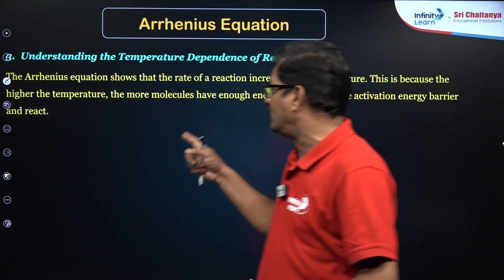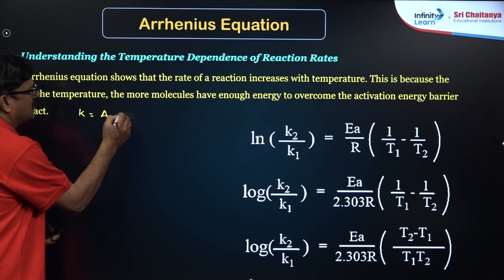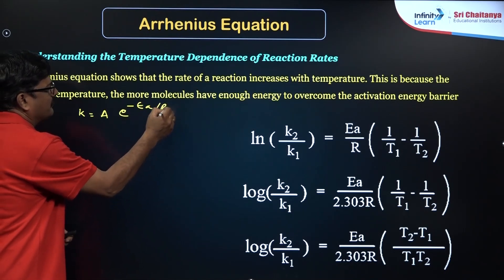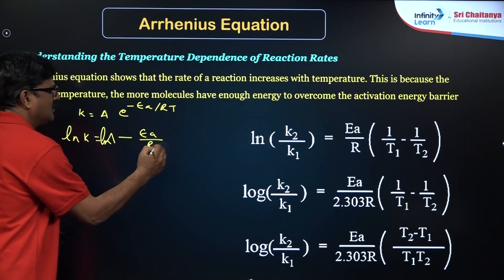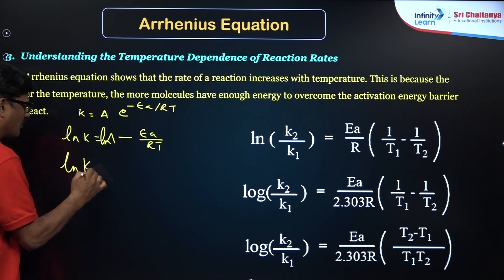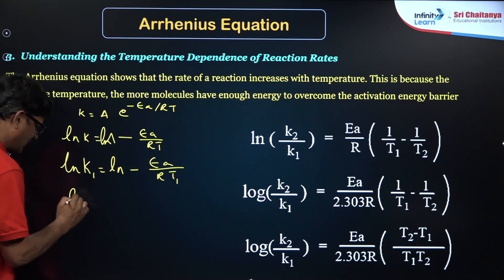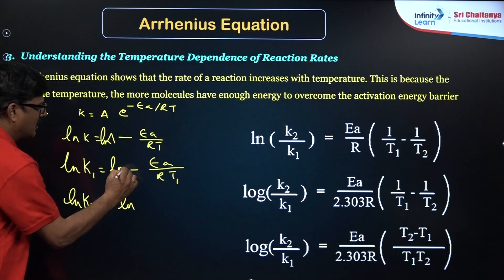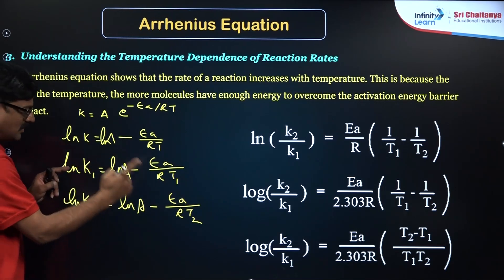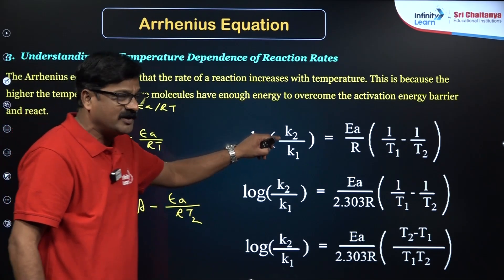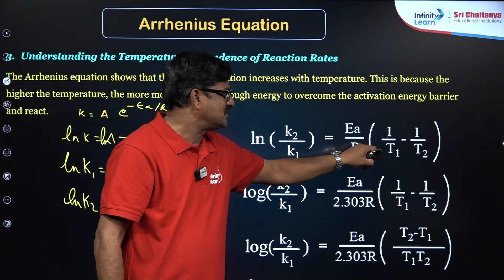This is very important, understanding the temperature dependence. k = A e^(-Ea/RT), we can say ln k = ln A - Ea/RT. At temperature T1, ln k1 = ln A - Ea/RT1. At temperature T2, ln k2 = ln A - Ea/RT2. So at T1 temperature k1, at T2 temperature k2. Comparing these two, ln(k2/k1) = (Ea/R) × (1/T1 - 1/T2).